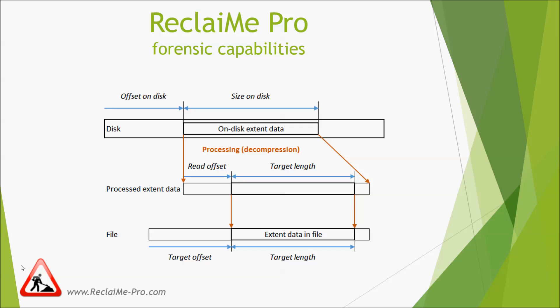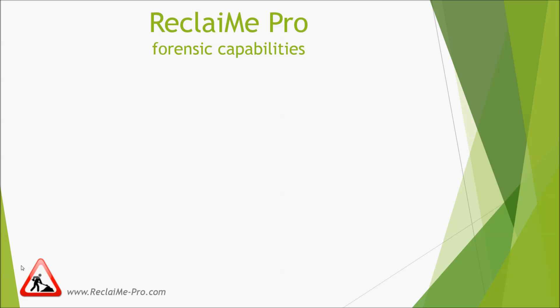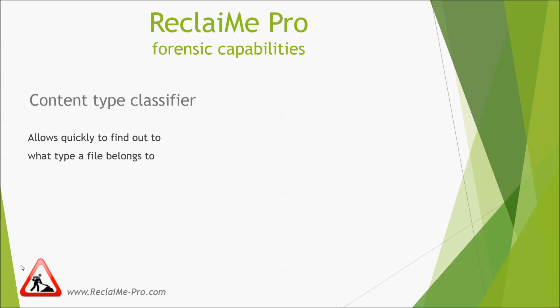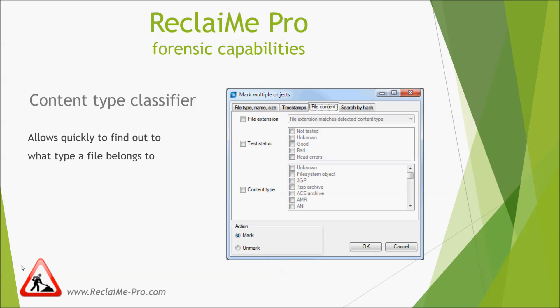The second forensic feature we have added is a content type classifier. The content type classifier allows you to quickly find out what type a file belongs to — namely, you can detect whether you are dealing with a DOC, JPEG, or PNG file, for example. Reclaiming Pro reads parts of the file and decides what the content type is. This analysis is pretty quick, but says nothing about the status of the file — whether it is good or bad.